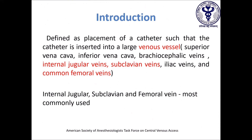Central venous catheterization is defined as the placement of a catheter into a large vein, such as the subclavian vein, internal jugular vein, or superior vena cava. Internal jugular, subclavian, and femoral veins are the most commonly used veins for insertion. In this video, we shall demonstrate how to insert the catheter into the internal jugular vein.